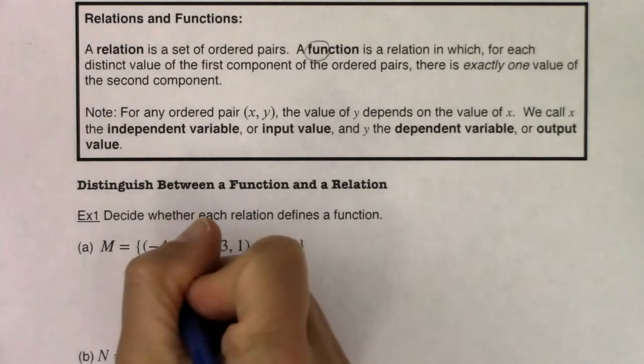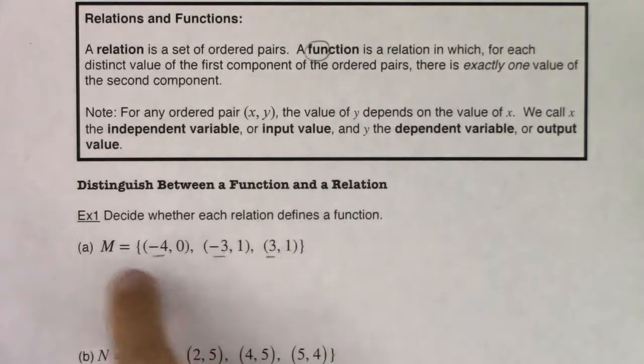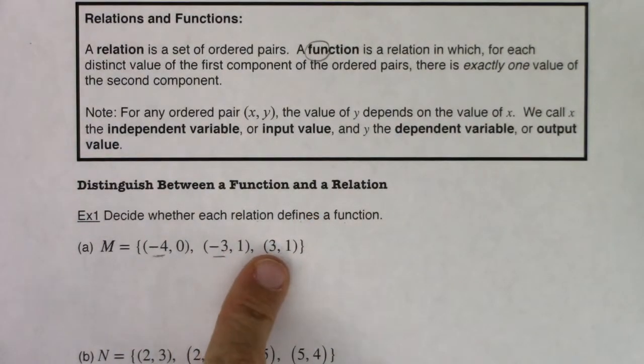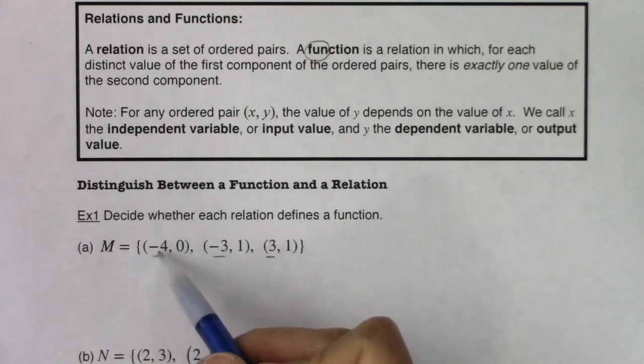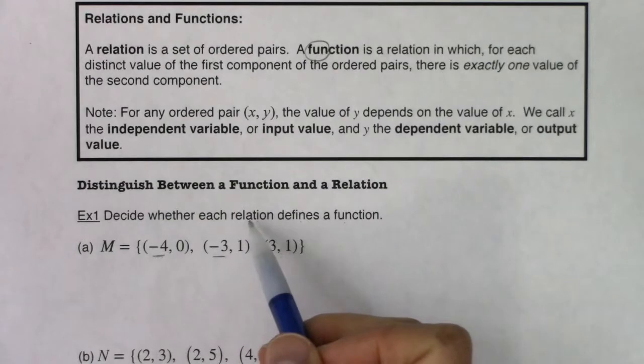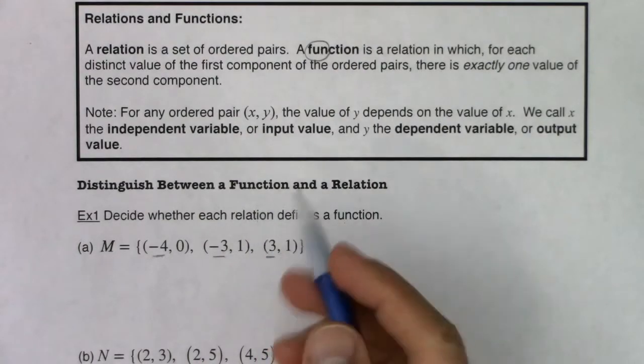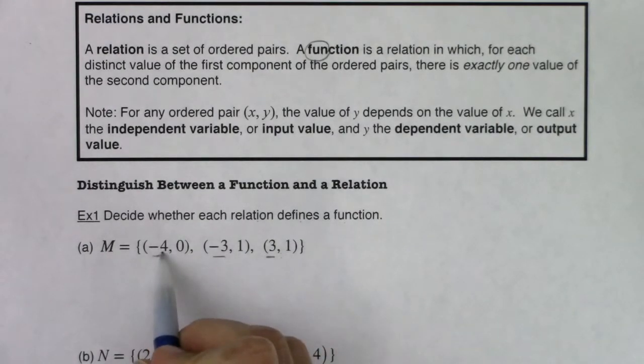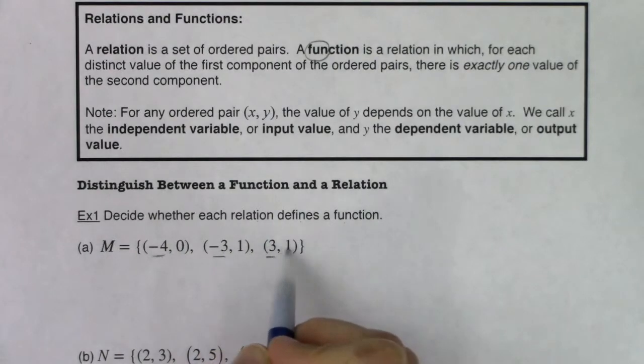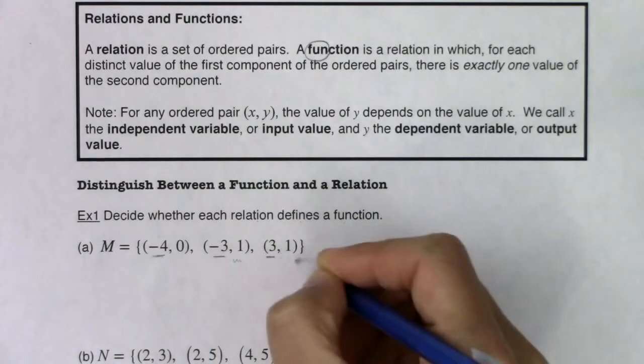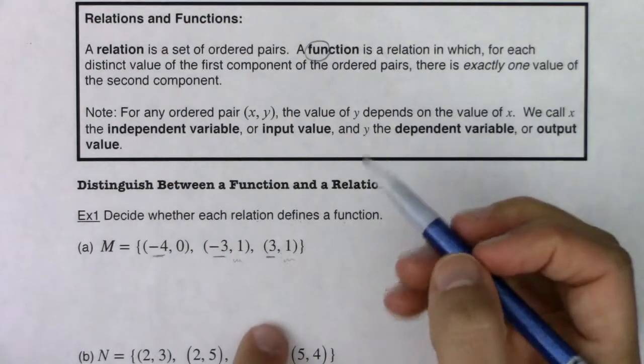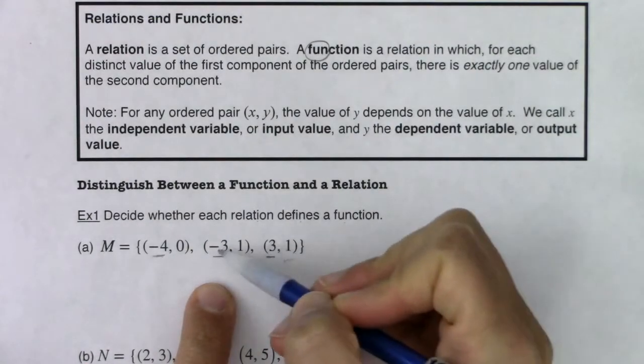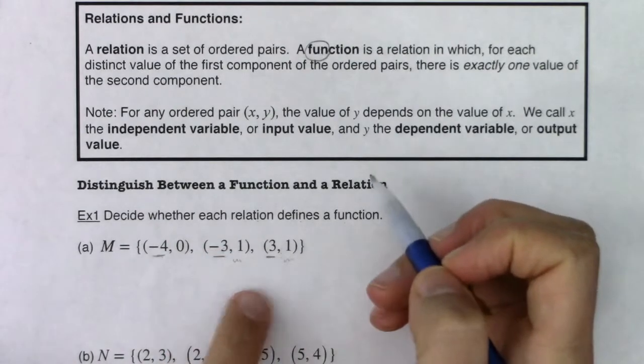We want to look at the X coordinates. My X coordinates here all happen to be distinct. That's great in terms of being a function because I don't have two ordered pairs here with the same X coordinate getting mapped to different Y coordinates. And I'll show you an example of that. We'll see that in part B. But as you see here, negative 4 just gets mapped to 0, negative 3 just gets mapped to 1, 3 just gets mapped to 1. And you might say, well hey, we had a repeat here. That's okay.